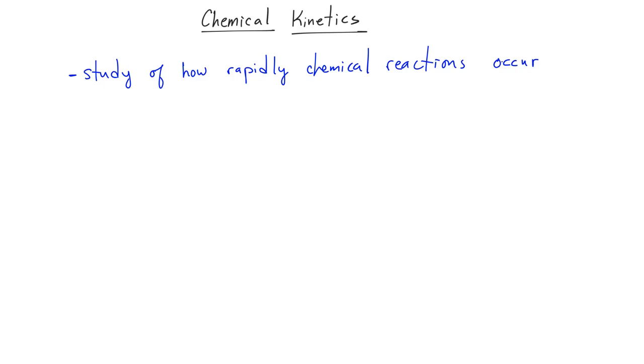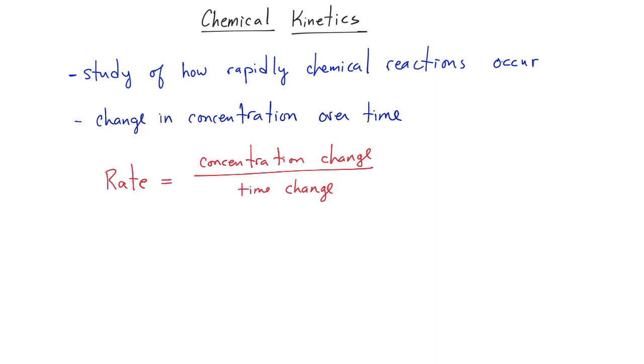Chemical kinetics is a study of how rapidly chemical reactions occur. When we speak about kinetics, we usually discuss it in terms of change in concentration of either reactants or products over some change in time. We call this the rate, represented by change in concentration over change in time.